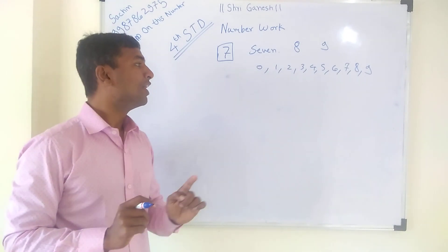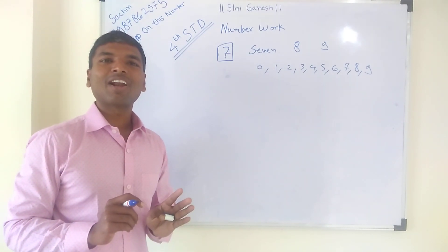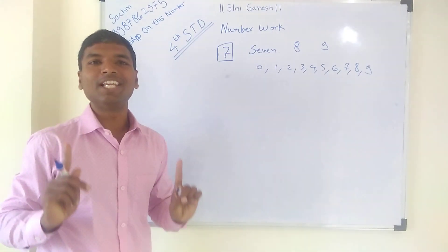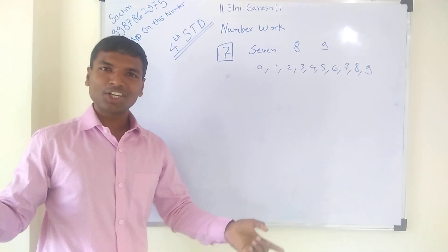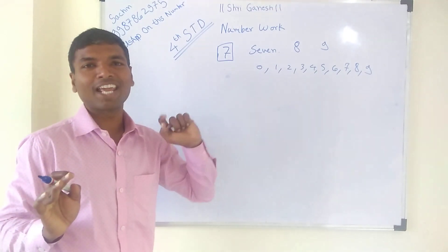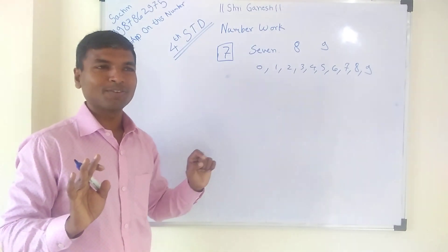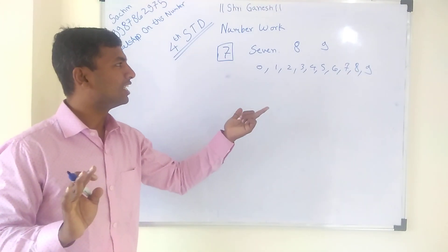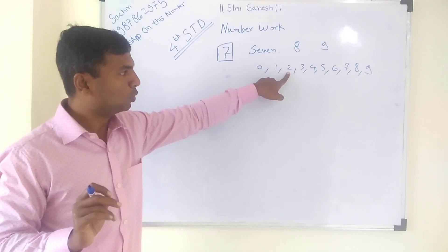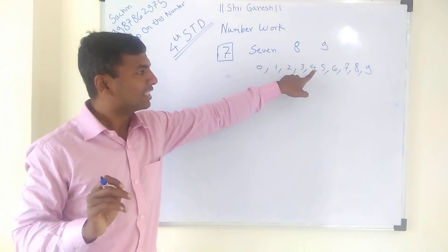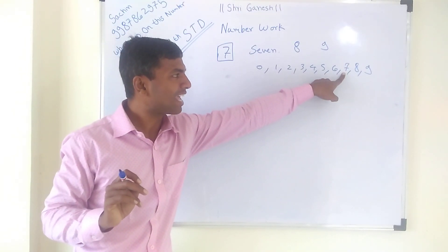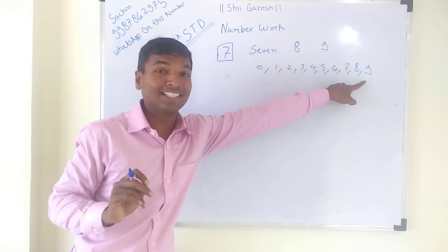Always remember, students — all the numbers whichever are formed, they are formed with the help of these 10 numbers only. All the numbers in the universe are a combination of these 10 numbers, 0 to 9. Please remember that. So you can read out the digits: 0, 1, 2, 3, 4, 5, 6, 7, 8, and 9.